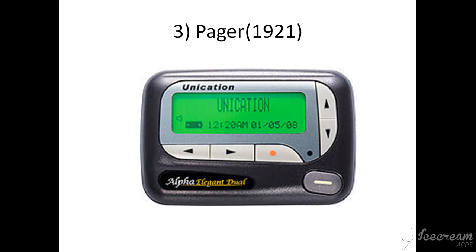The next type is the pager, a communication device introduced in 1921. A pager is a small telecommunication device that receives alert signals and/or short messages. This type of device is convenient for people expecting telephone calls but who are not near a telephone set to make or return calls immediately.